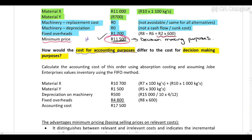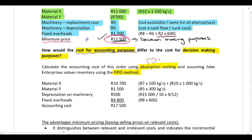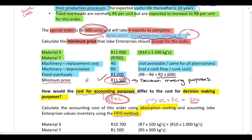Now I want to highlight how the calculation changes if you need to work out the cost for accounting purposes instead of decision-making purposes. For accounting purposes, assume we use absorption costing — meaning both variable and fixed costs are included in inventory cost — and inventory is valued using the First In First Out (FIFO) method. This gives the cost that goes to the profit and loss statement.